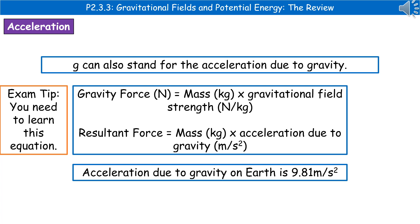So we have two equations: gravity force equals mass times gravitational field strength, as we've already looked at; and resultant force, again in newtons, equals mass times acceleration due to gravity. The value for acceleration due to gravity on Earth is 9.81 meters per second squared.